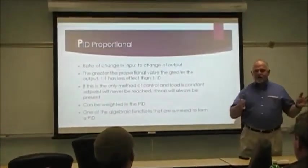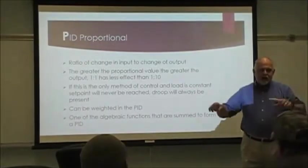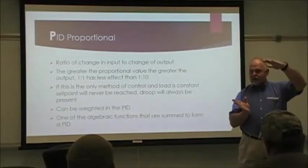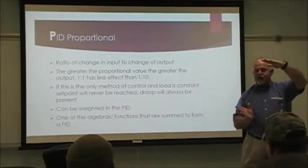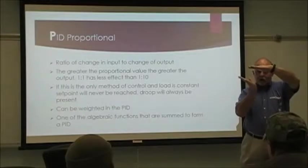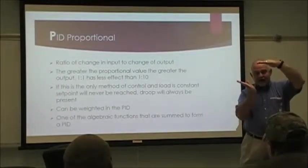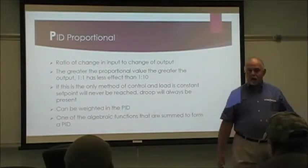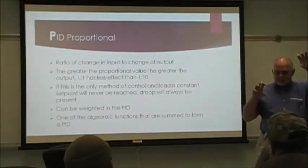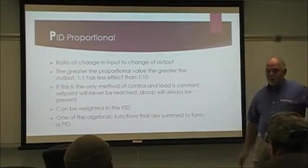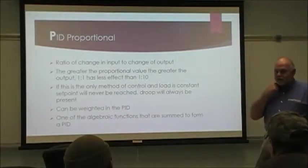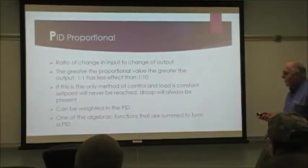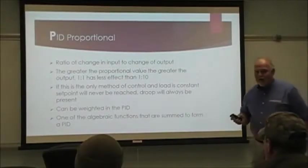Following through this: let's say we have a constant load and the load never changes. As we get closer and closer to set point, the cooling valve — let's say it's a cooling application — will get to that point where the valve is fully closed before it actually ever reaches set point. So that droop we talked about earlier, the difference between the set point and the control point, will stay there. You'll never capture it. So if proportional is the only one used, you'll always have a droop.